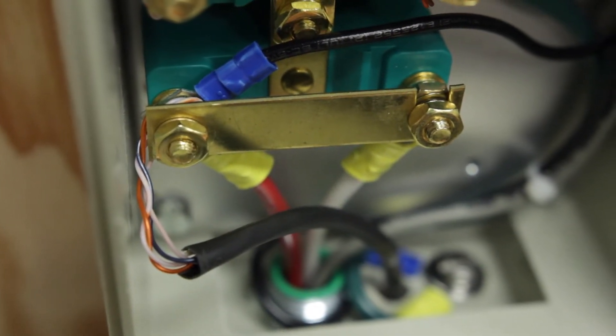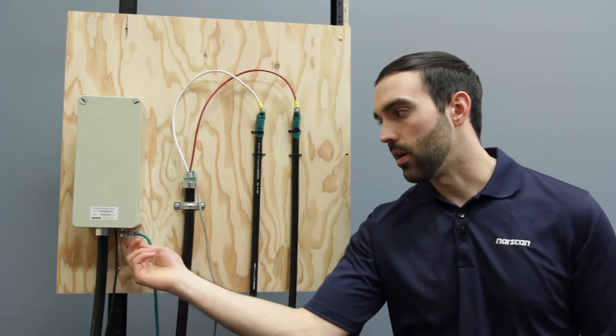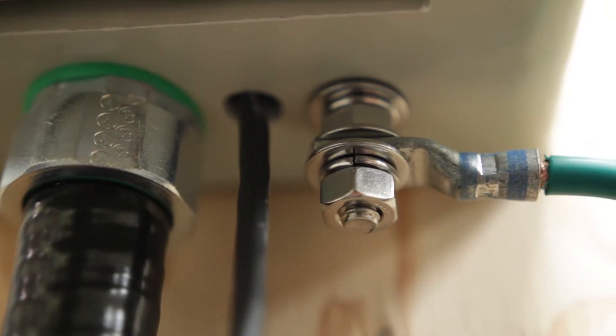The last step is to take the ground line and connect it to the external ground lug found on the bottom of the CoRAM right beside that entry port.